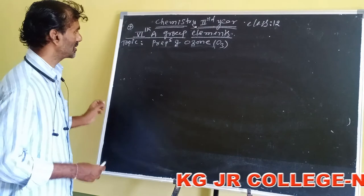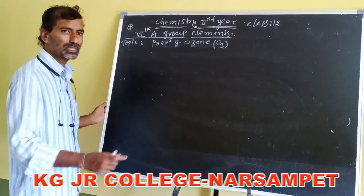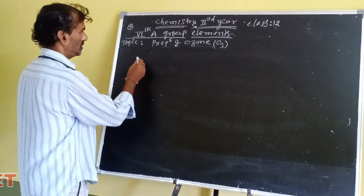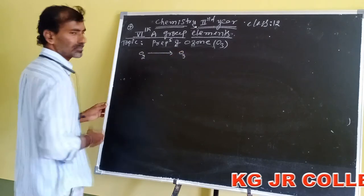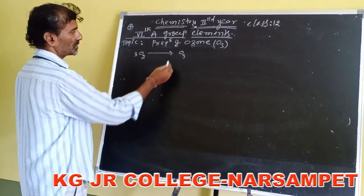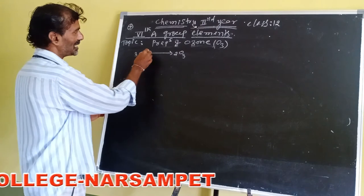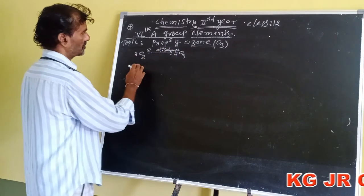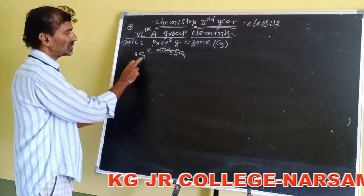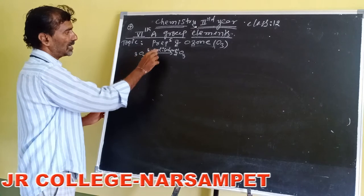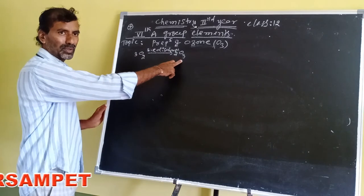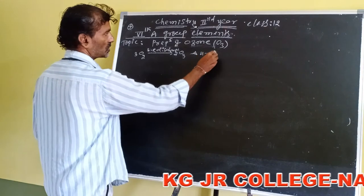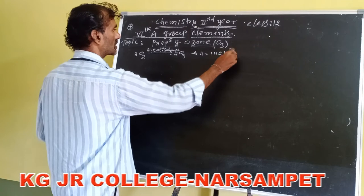Ozone is indicated as O₃. When cool and dry air is passed into the silent electric discharge, some amount of oxygen is converted into ozone. The formation of ozone is an endothermic reaction: 3O₂ gives rise to 2O₃ under silent electric discharge.